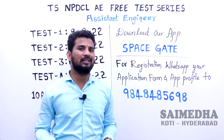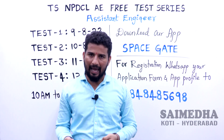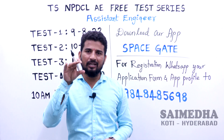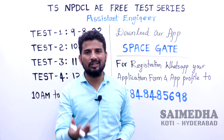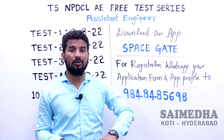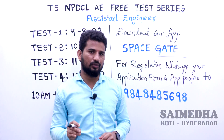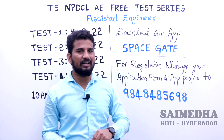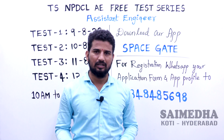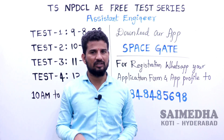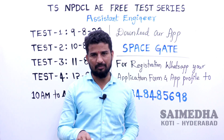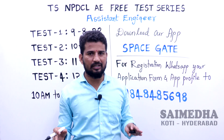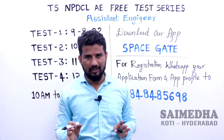While downloading the SpaceGate app, you need to complete the registration process. First, you need to sign up on the app — enter your mobile number, your name, and your email ID. The name you give in the app must match and sync with the NPDCL application form. Once the sign-up process is complete, there will be five thumbnails at the bottom. The first is Home, the second is Batches — and once registration is completed, you will be able to see the NPDCL batch there.